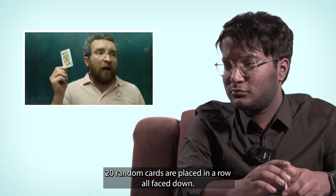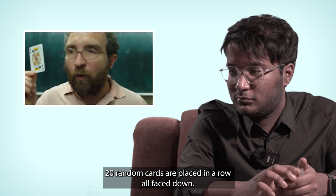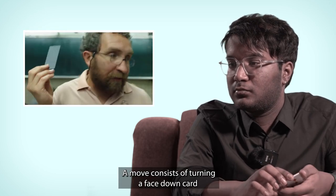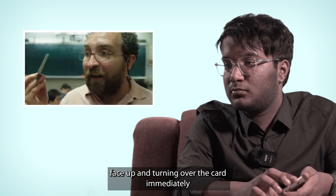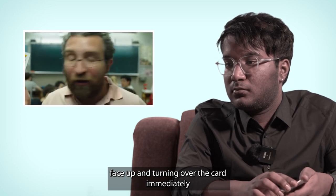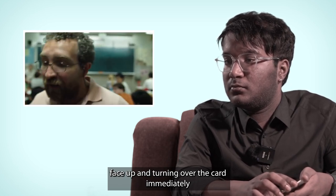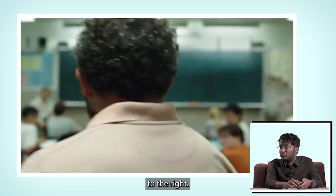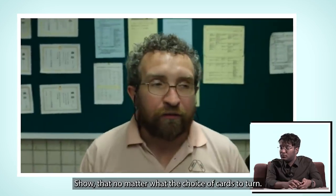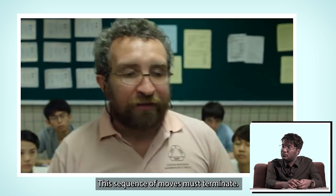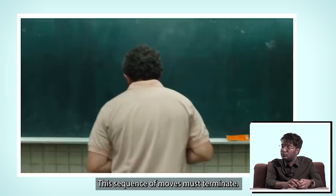20 random cards are placed in a row, all face down. A move consists of turning a face down card face up and turning over the card immediately to the right. Show that no matter what the choice of cards to turn, this sequence of moves must terminate.